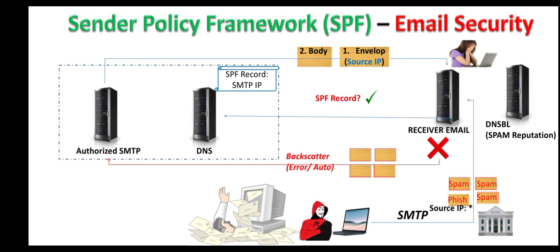There is a service known as DNS-based Blackhole List, or DNS-based Blacklist, which is used to check the spamming reputation of an IP address. When a receiving email system receives an email, it checks the source IP address against this service by sending a DNS query. If the DNS-based blacklist indicates that the IP address has a spamming reputation, the email gets dropped; otherwise it is accepted by the receiving mail server.